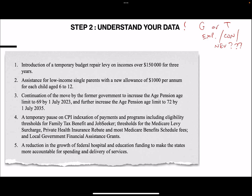First: introduction of a temporary budget repair levy, a tax on incomes. So they're going to increase tax - therefore it's contractionary. Second: assistance for low-income single parents with a new allowance. A new allowance of $1,000 - we're seeing an increase in G. Therefore this particular budget stance would be expansionary.